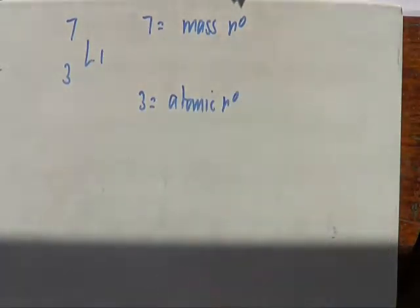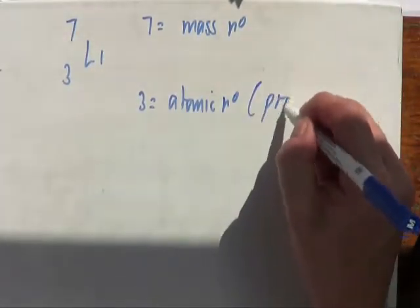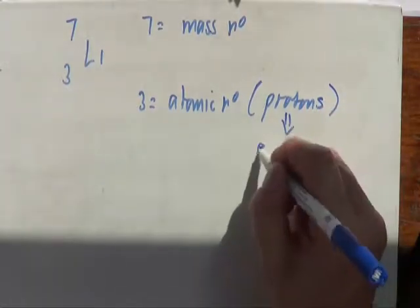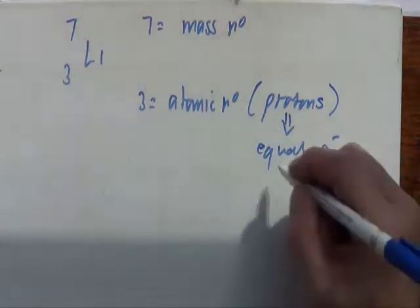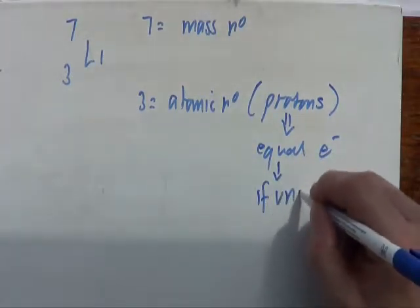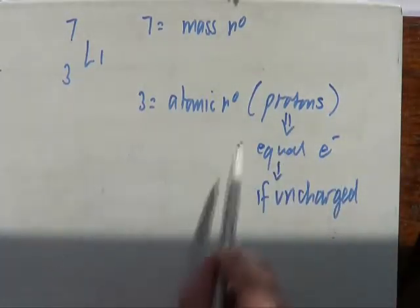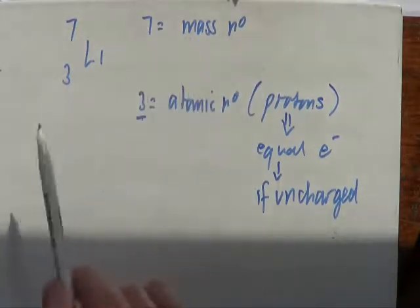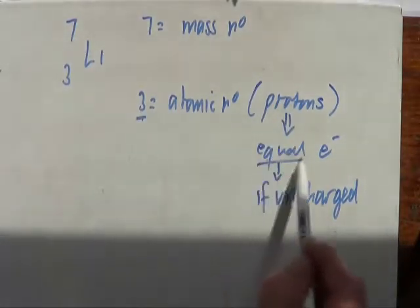It's really important that you know what these numbers tell you so you can apply it in an exam. The bottom number is the number of protons — sometimes called the proton number. Now, that is often equal to the electron number, but only if it's uncharged. Once something becomes charged, the numbers of protons and electrons no longer are equal. But this number always tells me the number of protons no matter what the charge is.